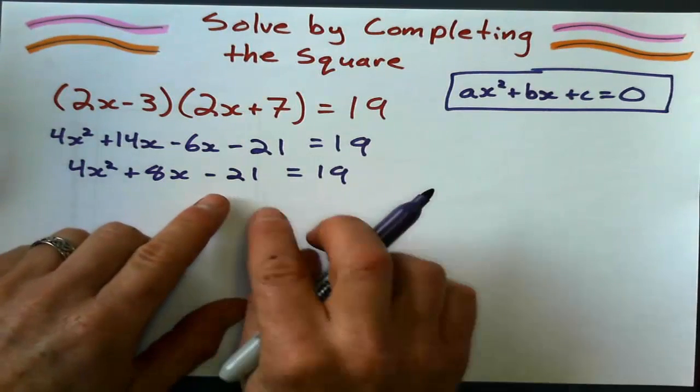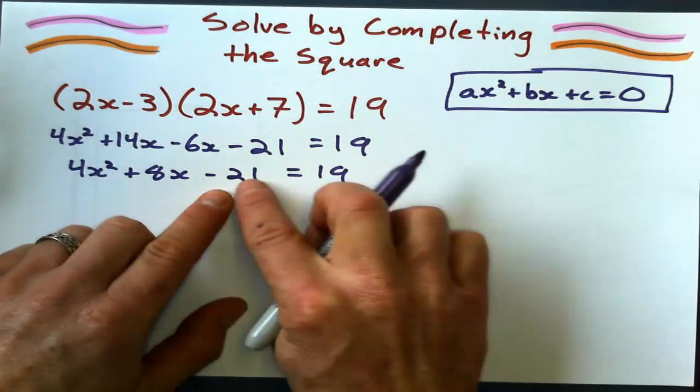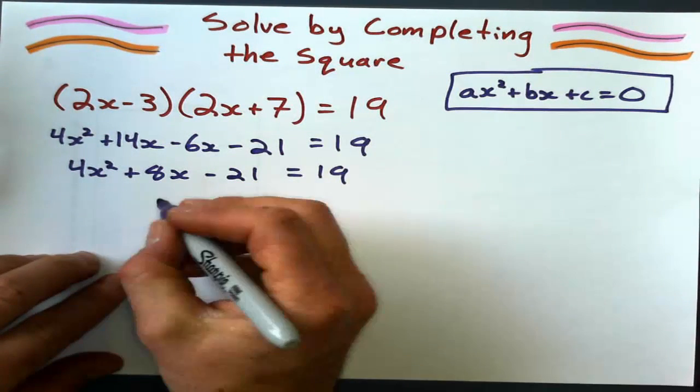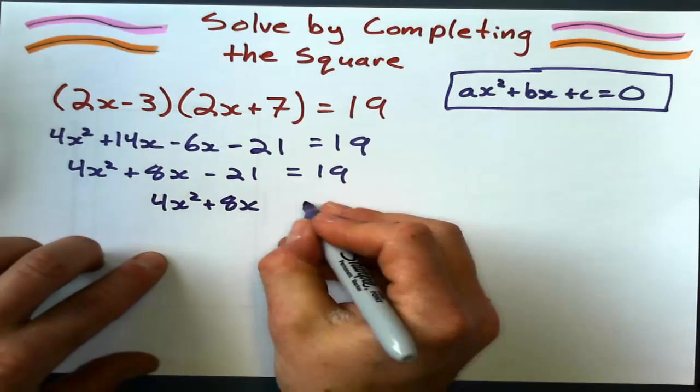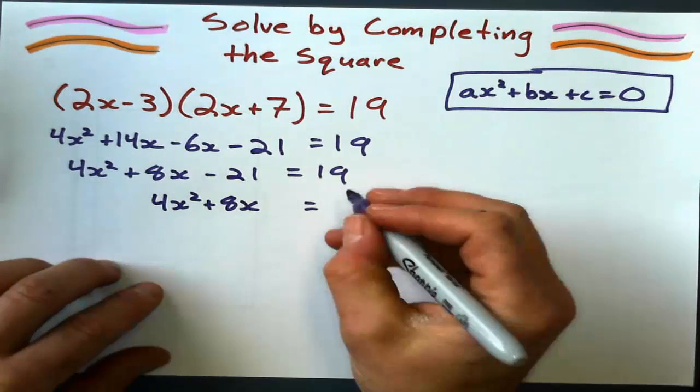So for completing the square, I want to get this C term and move it over to the other side, making it 4x squared plus 8x. I'm going to leave a little blank there, and 19 plus 21 is 40.